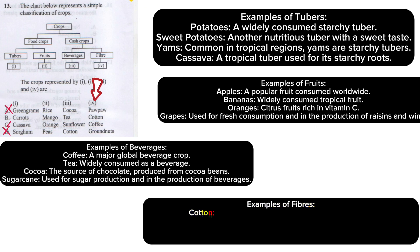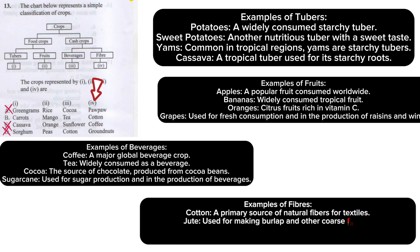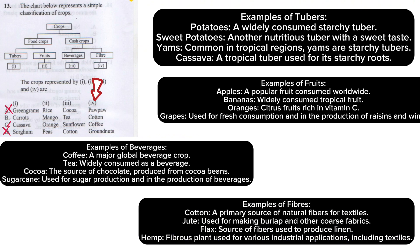You can also look at the fiber category. Examples of fiber include cotton, jute, flax, and hemp. In choice C, coffee is not a fiber, so choice C is further confirmed as out.